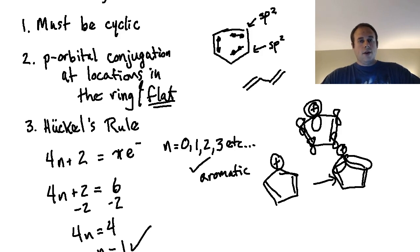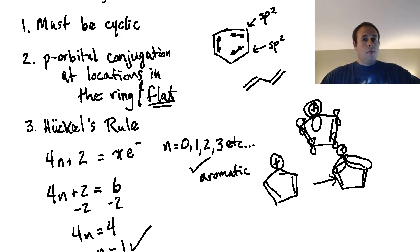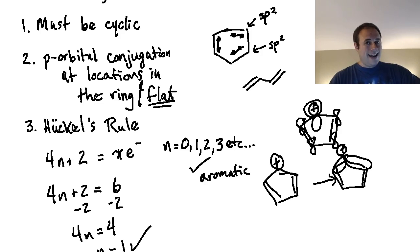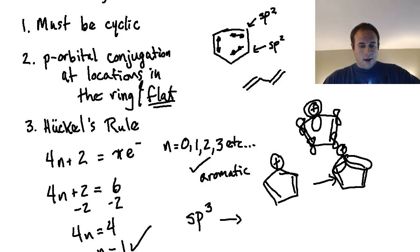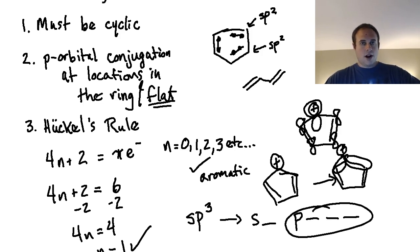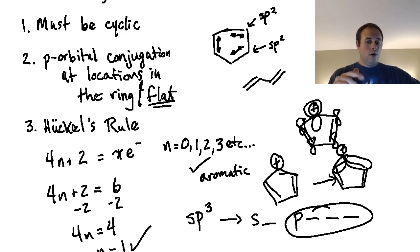For rule two, you need sp2 or sp hybridization — almost always sp2 — at every point in the ring. You cannot have sp3 anywhere in the ring because sp3 carbons (or nitrogens or oxygens) are tetrahedral and not planar. With sp3 hybridization, all three p orbitals are used in hybridization, so there's no remaining p orbital available for conjugation with neighboring atoms, which ruins aromaticity.